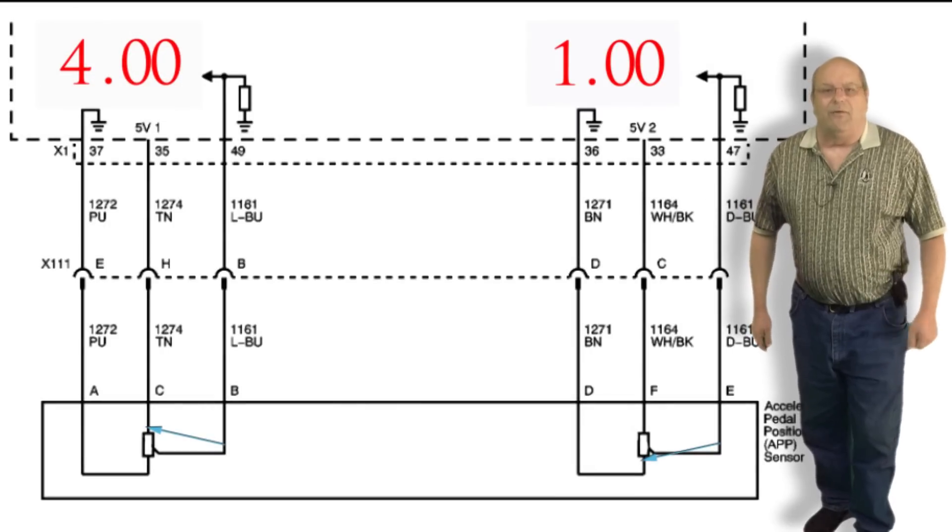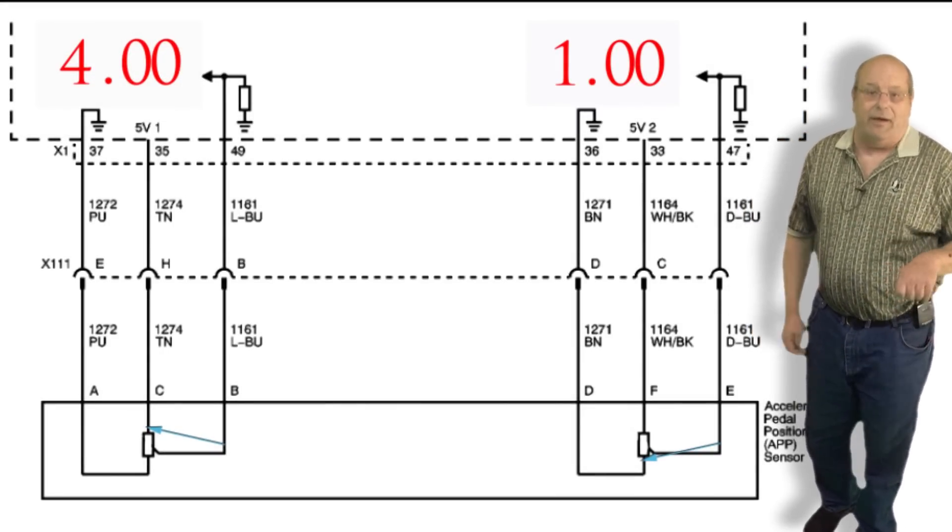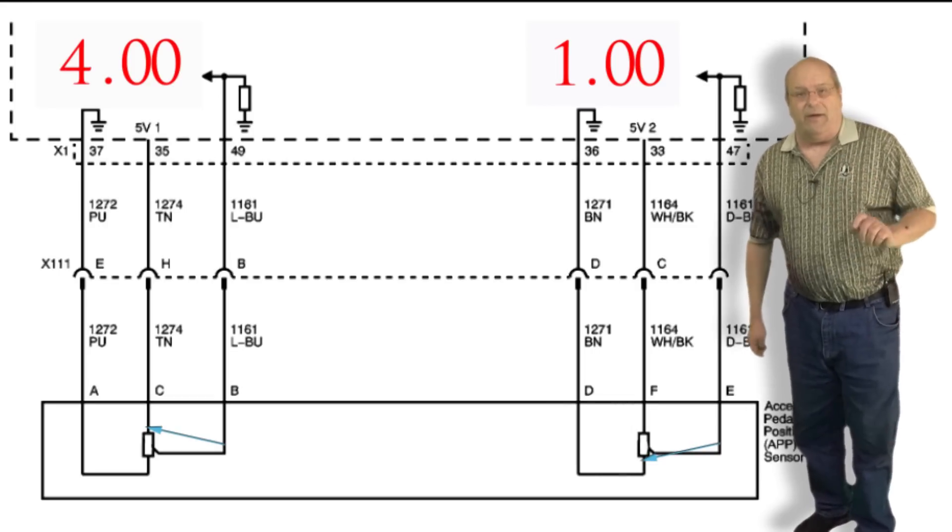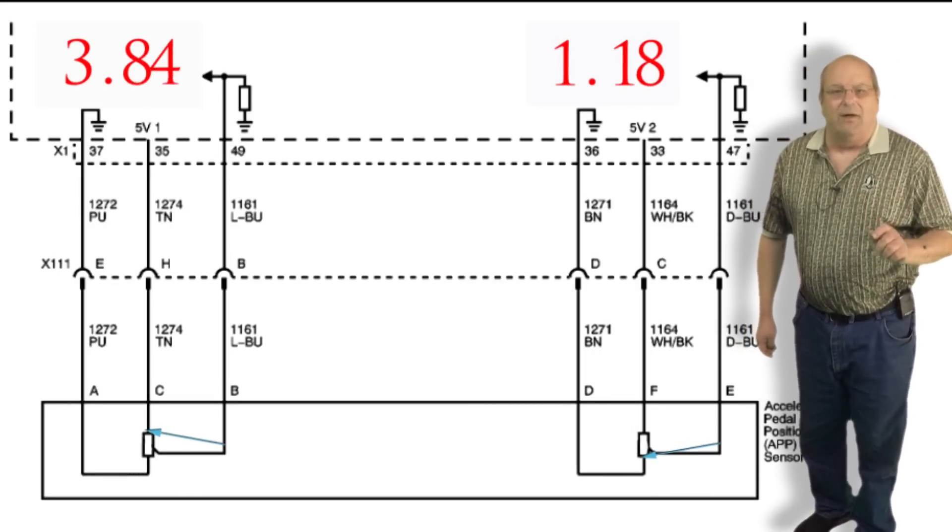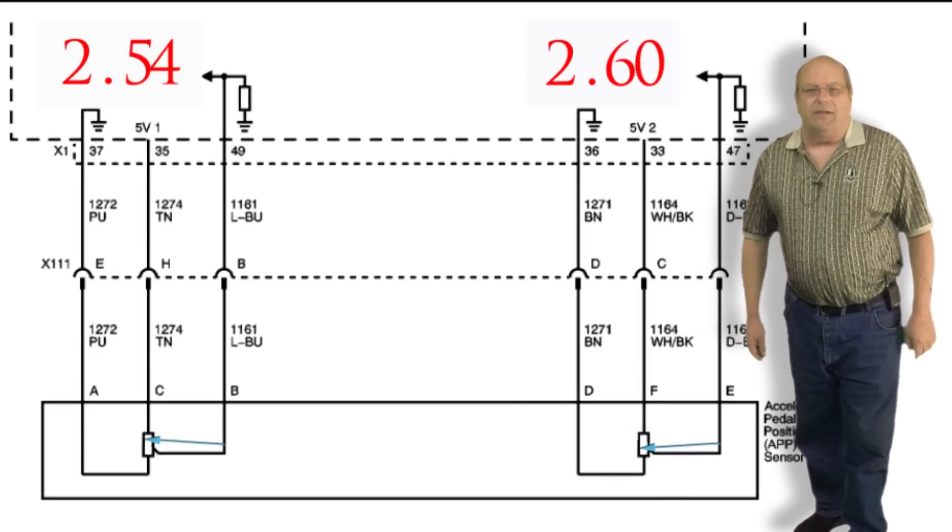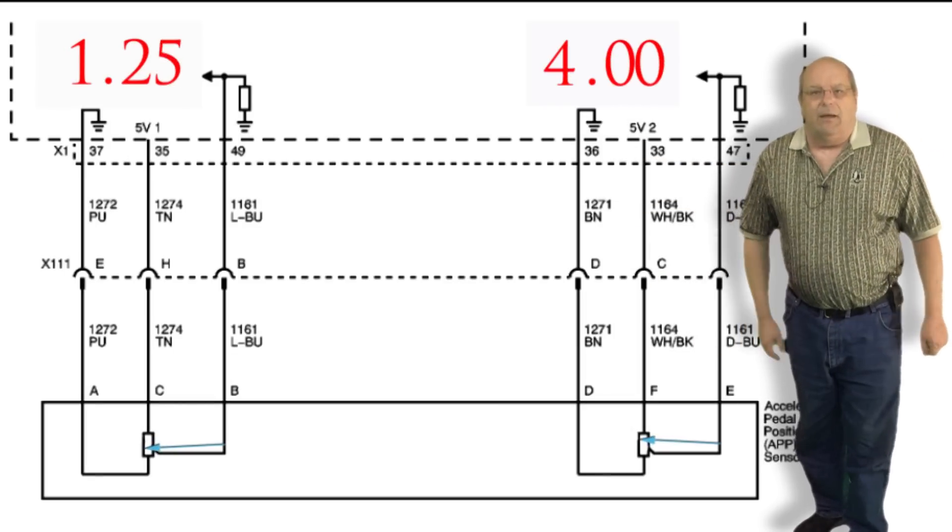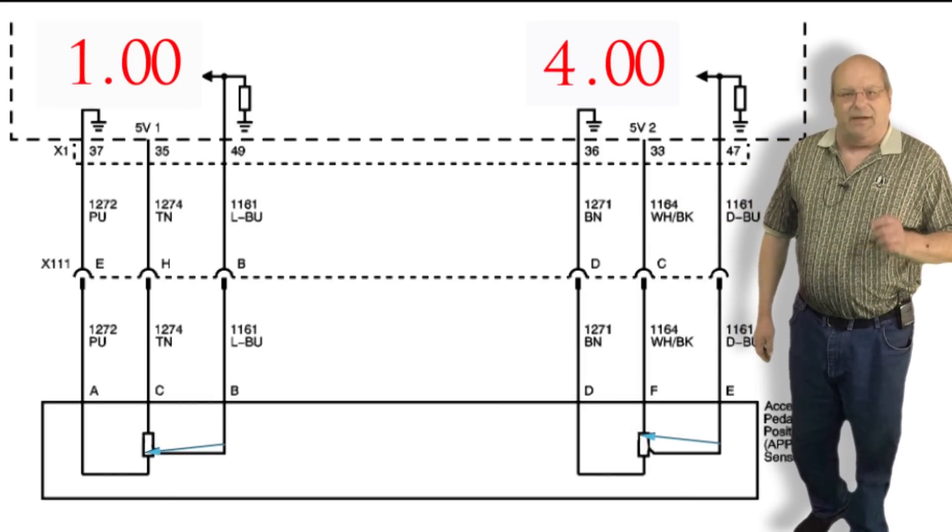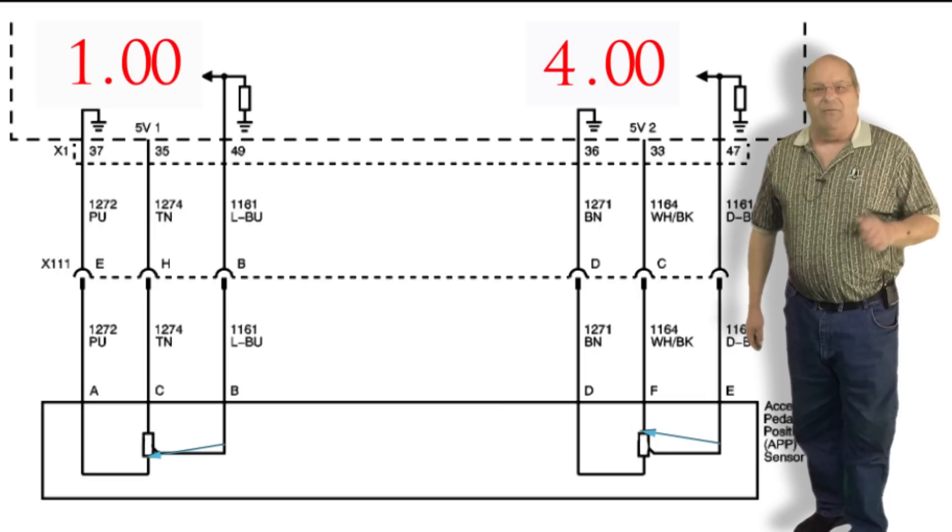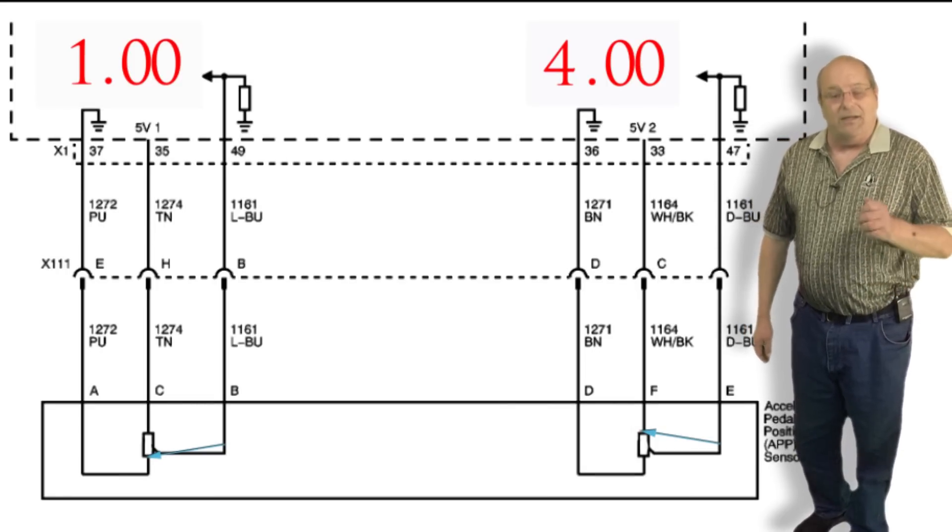Before we go any further with our testing, let's take a look at how the system functions. Behind me is a wiring diagram for the accelerator pedal position sensor, or APPS. On the top of the screen is the PCM. The APPS is on the bottom. Notice each of the sensors on the APPS receive a 5 volt reference from the PCM. They each have their own ground and signal port.